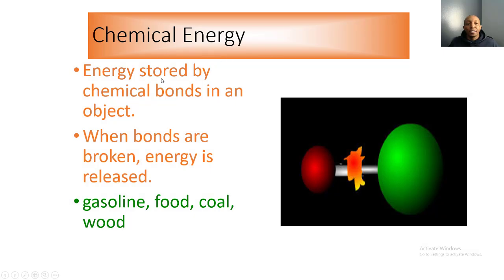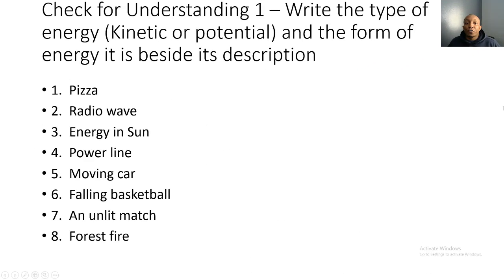Chemical energy is energy stored by chemical bonds in an object; when the bonds are broken, energy is released. Examples include gasoline, food, coal, and wood. Gasoline's chemical bonds are broken by heat energy to give a car the ability to move. When we eat food, we chew and digest it to break chemical bonds and release energy so we can move. Coal and wood are burned to release chemical energy in the form of fire, which ultimately causes thermal energy.